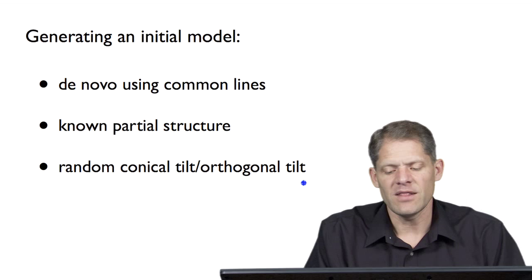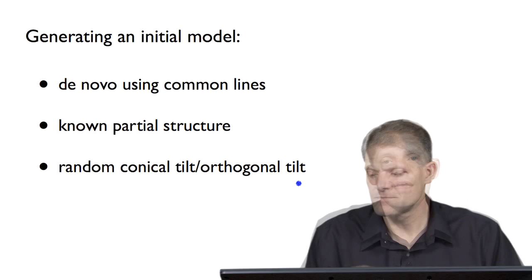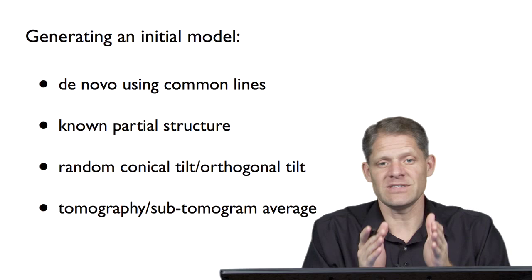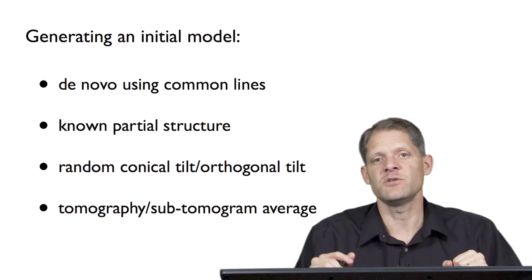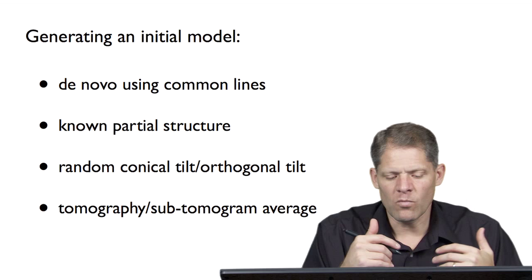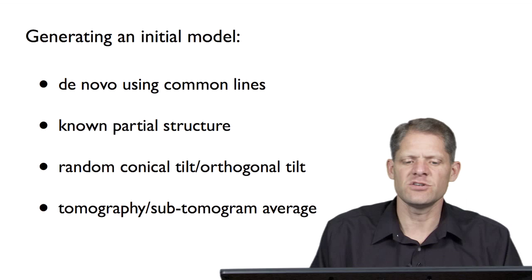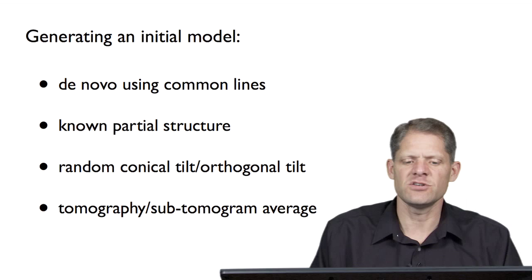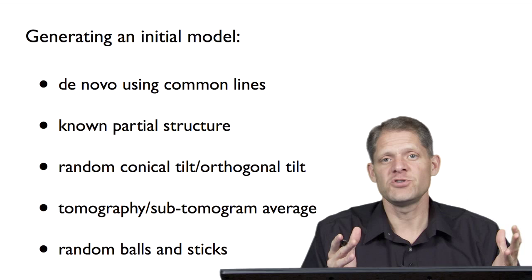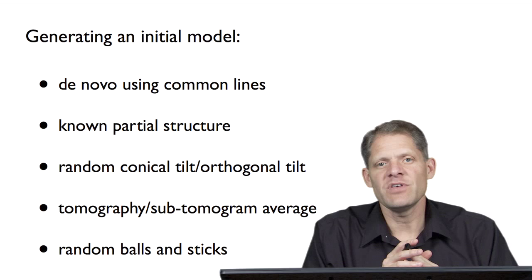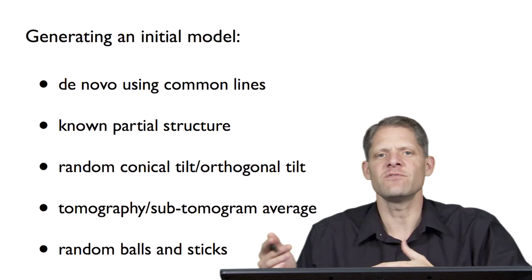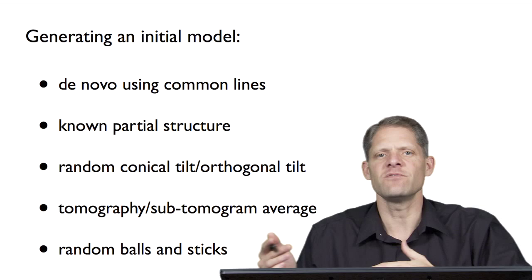Two other related techniques are called random conical tilt and orthogonal tilt, and these important techniques also lead to an initial model. In addition, tomography can be used to generate an initial model of a single individual particle, or tomographic reconstructions of a number of individual particles could be produced and averaged to produce a subtomogram average that could serve as a very good initial model. Finally, for some structures it's been shown that simply guessing a very low resolution model with balls and sticks can be sufficient to guide the very first classification of images into initial class averages that then refine effectively into a true structure.